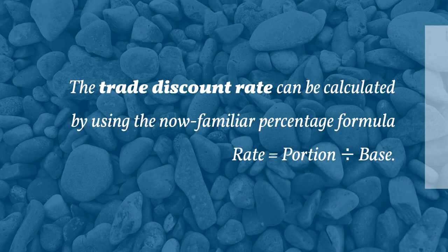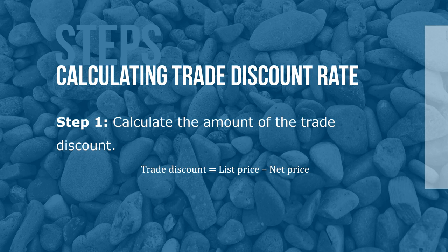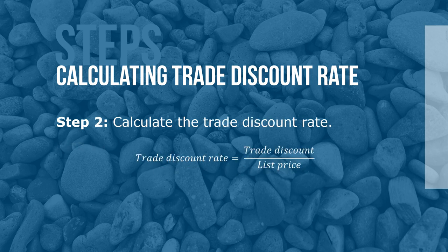The trade discount rate can be calculated using the formula: rate equals portion divided by base. The amount of the trade discount is the portion (numerator), and the list price is the base (denominator), giving the formula trade discount rate equals trade discount over list price. To calculate the trade discount rate: Step 1, calculate the amount of the trade discount — trade discount equals list price minus net price. Step 2, calculate the trade discount rate — trade discount rate equals trade discount over list price.